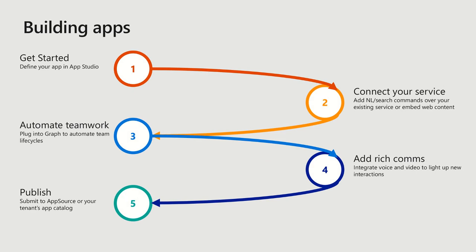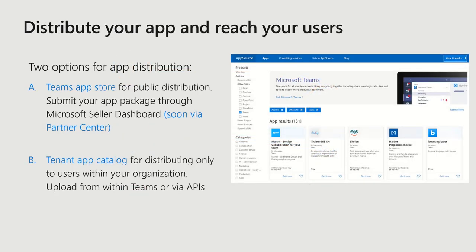The last step, once you have your app and you've connected your services and integrated with Graph and calling and meetings, is to publish it. We offer two main options for distribution. If you want to make your app available for all end users of Microsoft Teams, you can publish it via the Seller Dashboard to AppSource — this will make it show up in the global Teams catalog in our in-client store. Soon, we'll make it possible to submit your app via the Partner Center. If you just want to make your app available for users within your organization, we provide the tenant app catalog — you can upload it to make it available just for employees of your company, either through the Teams UI or via available Graph APIs.